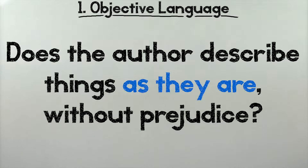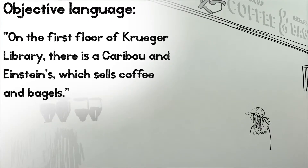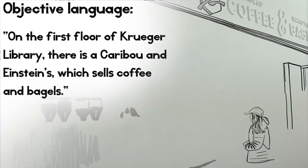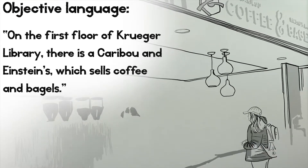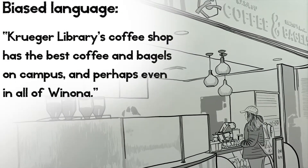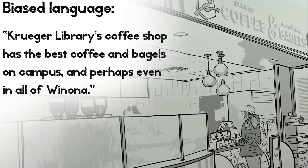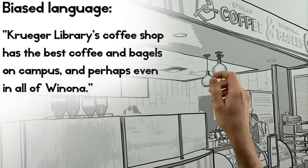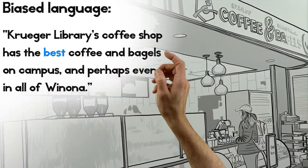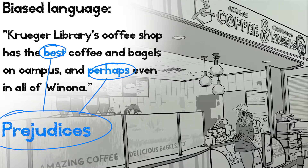1. Objective language. Does the author describe things as they are, as opposed to how you or I might feel about them? For example, on the first floor of Kruger Library there is a Caribou in Einstein's, which sells coffee and bagels. That sentence was written using objective language — note the absence of my opinion. Now let's try again with some not-so-objective language: Kruger Library's coffee shop has the best coffee and bagels on campus, and perhaps even in all of Winona. Both sentences include the same facts, but the second one reveals my prejudices.